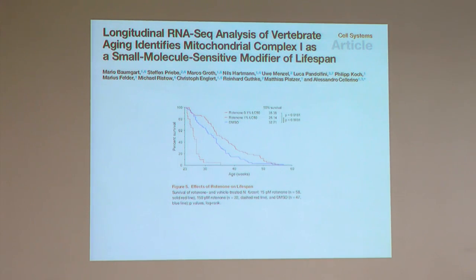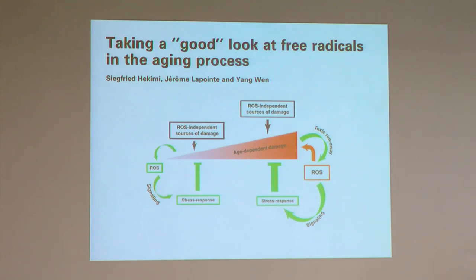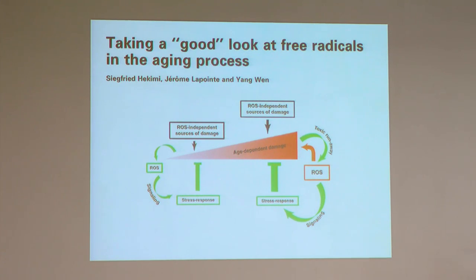Recently, the group of Alessandro Fellerino published a paper where they gave rotenone to a vertebrate fish species, as others have done in worms, and the fish lived longer. The usual explanation for these contradictory results is that low levels of ROS are beneficial while high levels are deleterious because they cause oxidative damage. So the role of ROS being good or bad depends mostly on the amount of ROS present.